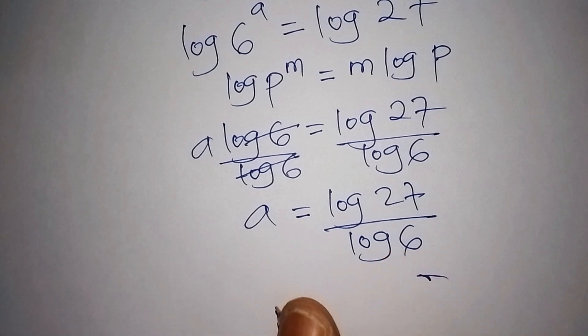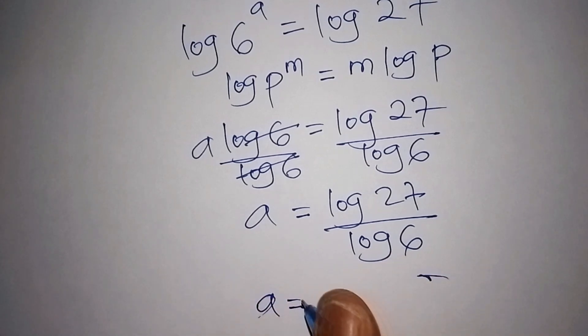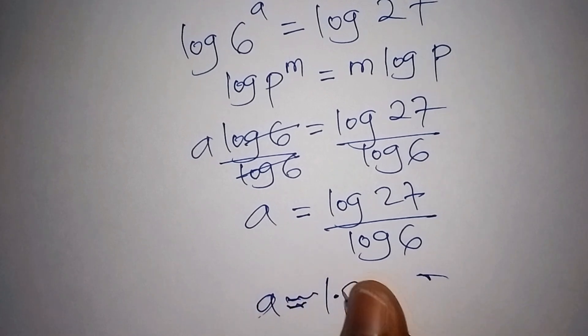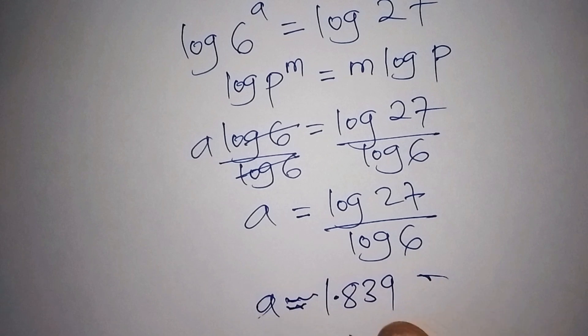So our value for a is approximately 1.839, 1.8339.